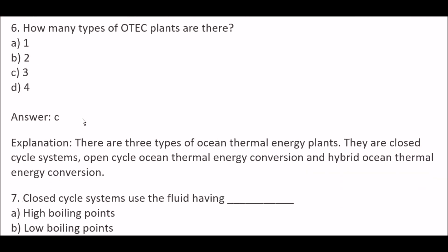Next question: How many types of OTEC plants are there? Option A, 1; Option B, 2; Option C, 3; Option D, 4. Right answer is Option C, 3. Because there are three types of ocean thermal energy plants: closed cycle system, open cycle ocean thermal energy conversion, and hybrid ocean thermal energy conversion.